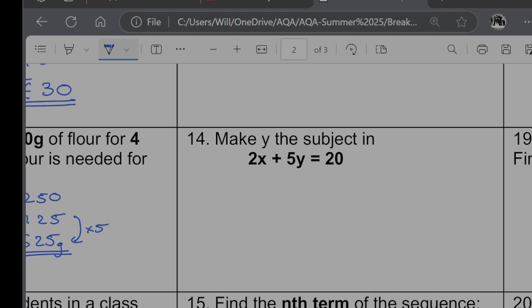Question 14. Make y the subject in 2x + 5y = 20. So I'm going to underline the term that I'm going to make the subject. And it's already a positive term, so I'm going to leave it on the left hand side. So the first thing I want to do is move everything else over to the other side. So I'm going to start by minusing 2x from both sides. That would give me 5y is equal to 20 minus 2x. And then my final step is going to be divide both sides by 5. So that's going to give me y is equal to 20 minus 2x all divided by 5.